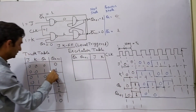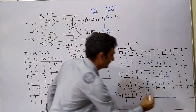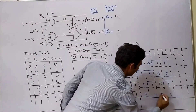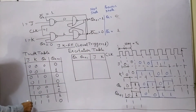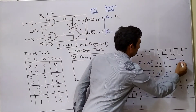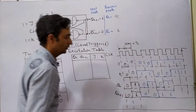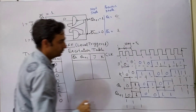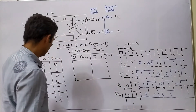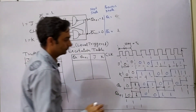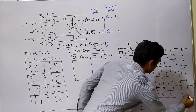Going through the sets: first set, second set, third set. For J=1, K=0 the output is 1, 1. For J=1, K=1 with QN=0, output toggles — it will be 1. And for J=1, K=1 with QN=1, output toggles — if it is 0 it will be 1, otherwise it will be 0. Output will toggle: if it is 0 then it will be 1, and if not, this will be 0.